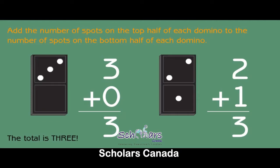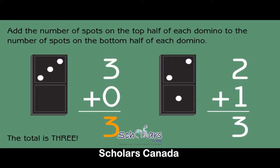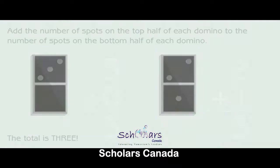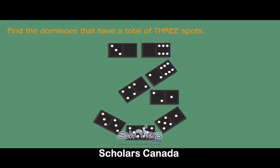Add the number of spots on the top half of each domino to the number of spots on the bottom half. The total is three. Three plus zero is three. Two plus one equals three. Find the dominoes that have a total of three spots.